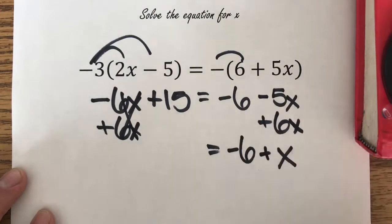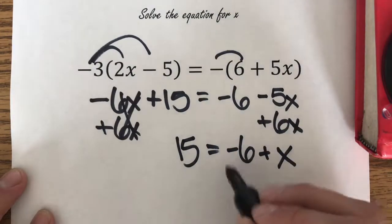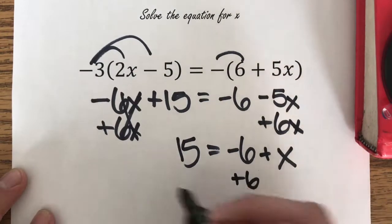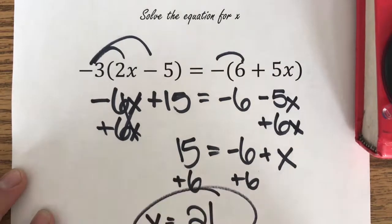Minus 6 drops down, that's a positive x. 15 drops down. In order to get x all by itself, I add 6. I add 6, 21 equals x or x equals 21.